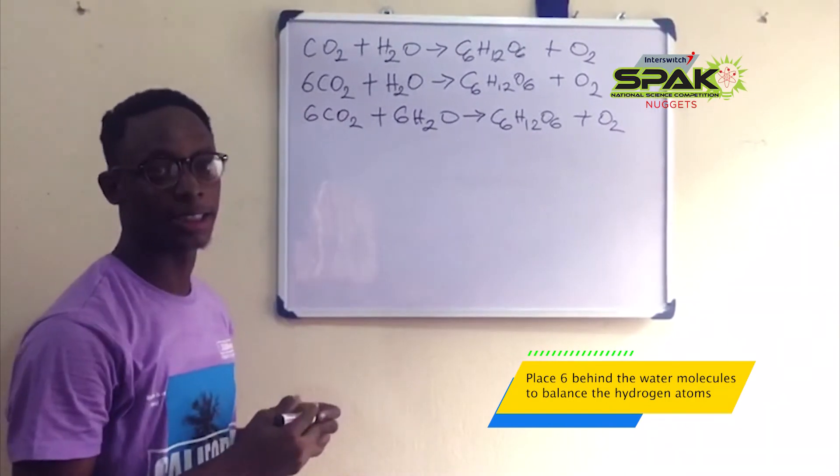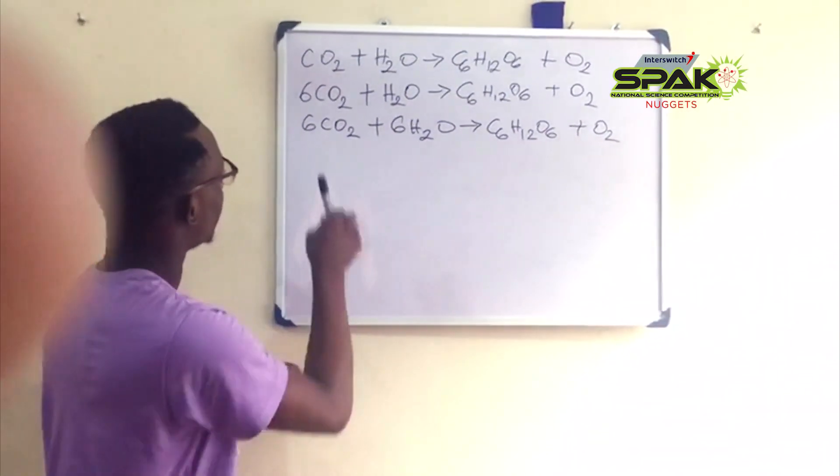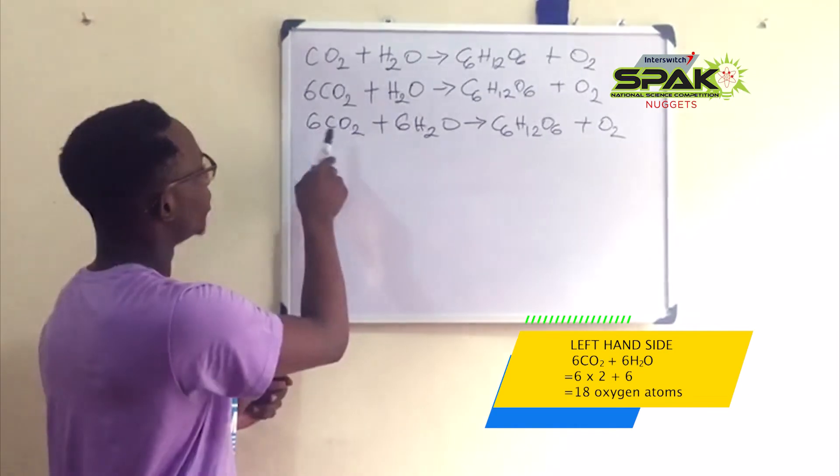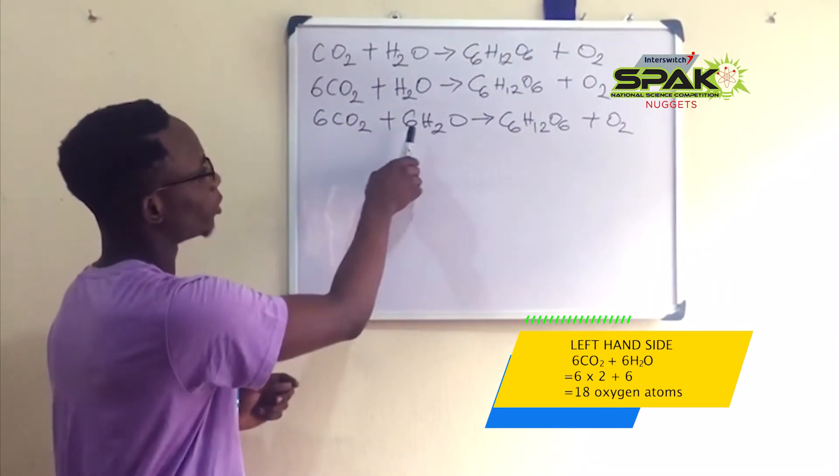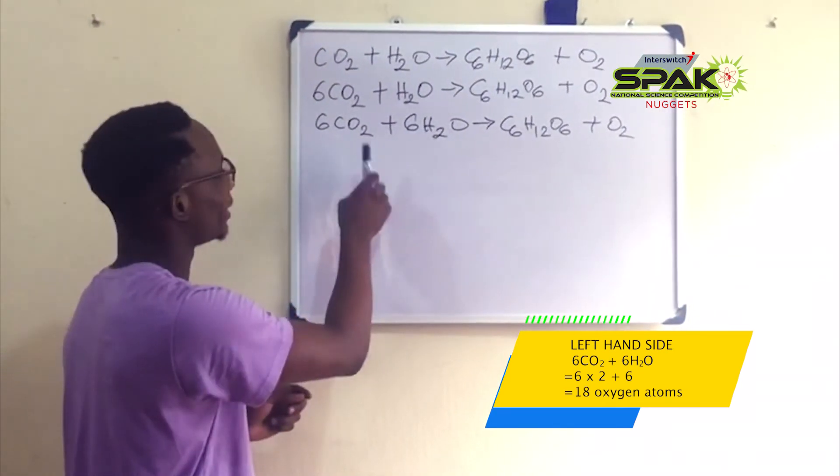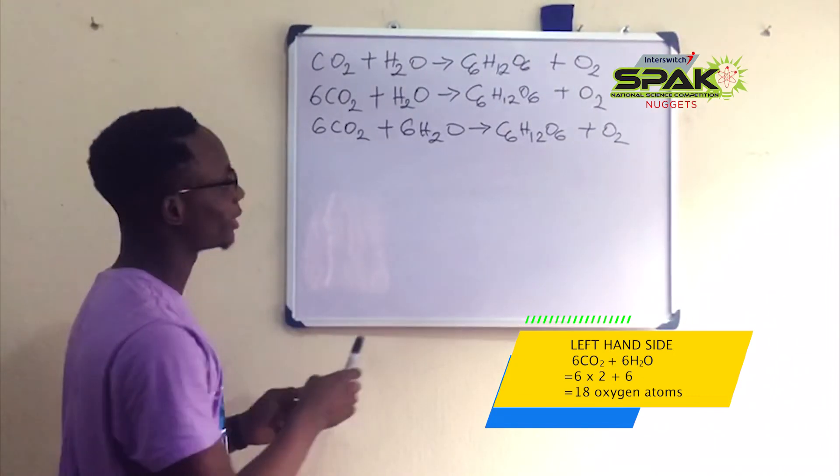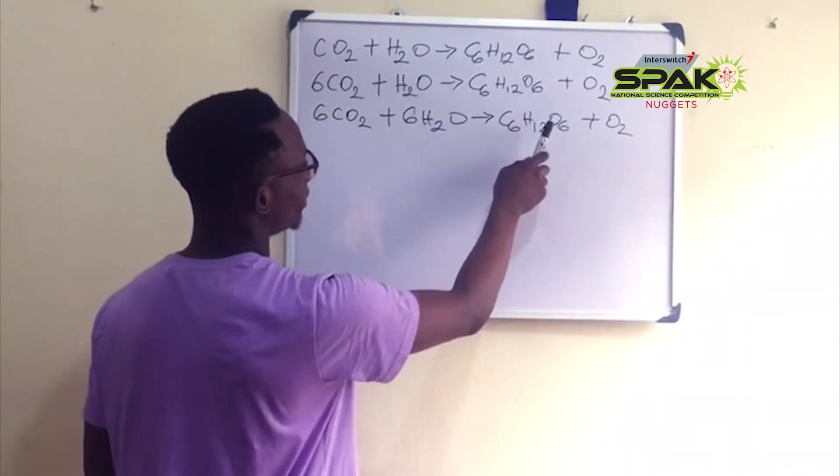Finally, we can balance the oxygen atoms. On the left hand side we have 6 times 2, 12 plus 6 times 1, 6. That's 18 oxygen atoms on the left hand side and on the right hand side we have 6 plus 2, 8 oxygen atoms.